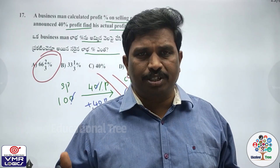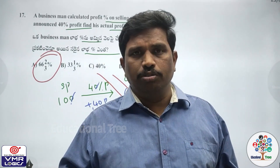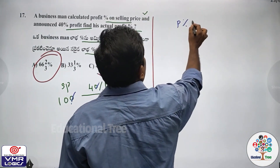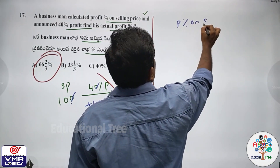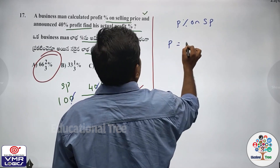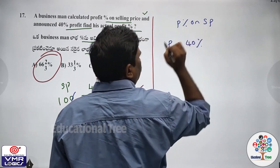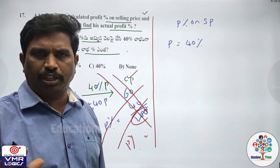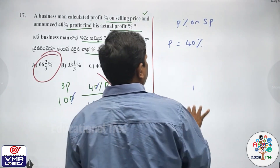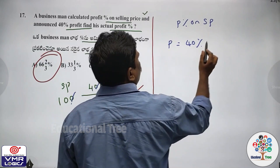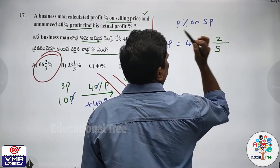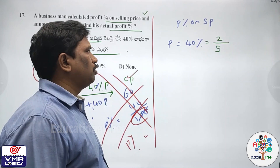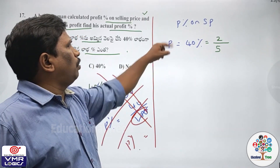He calculated the profit percent on SP — that is wrong. He calculated the profit percent on SP and announced 40%. 40% as a fraction is 2 by 5. This is the businessman concept.